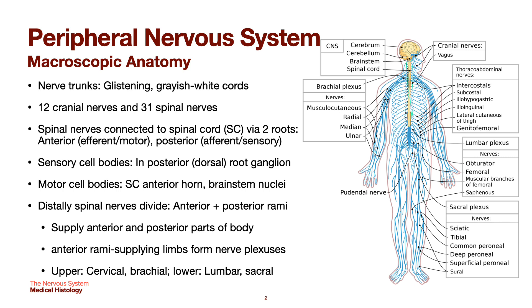The distal spinal nerves will divide into your anterior and posterior rami, supplying the anterior and posterior parts of your body. The anterior rami supply the limbs from the nerve plexuses: the upper for the cervical and brachial, and the lower for lumbar and sacral.